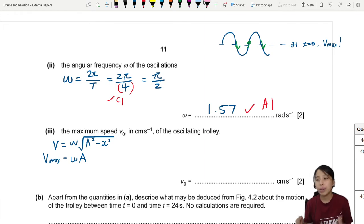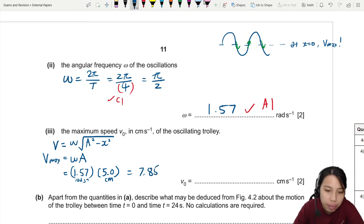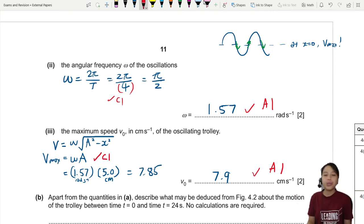And this is how we get the equation for maximum velocity. So now we plug in all the things that we know. So this can be 1.57 times - let's check the units. Radians per second. And they want it in cm, so I'm just going to keep my 5.0 cm amplitude. And this one will give me about 7.85, or you could write it as 7.9. This one is 1 mark. If you got the maximum velocity equation, that's 1 mark, or you used it.